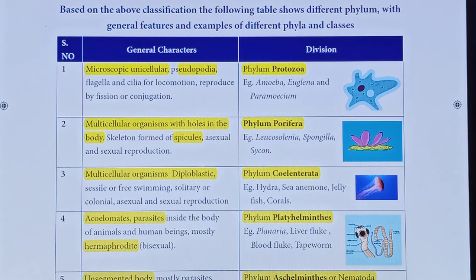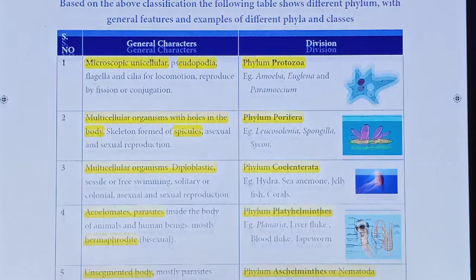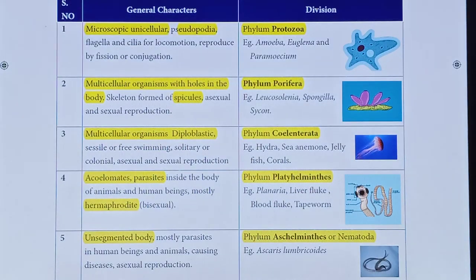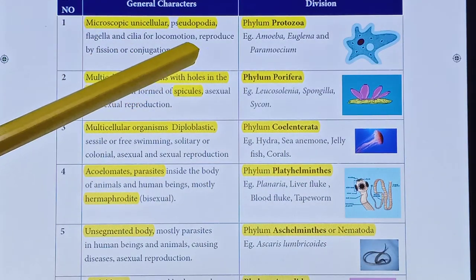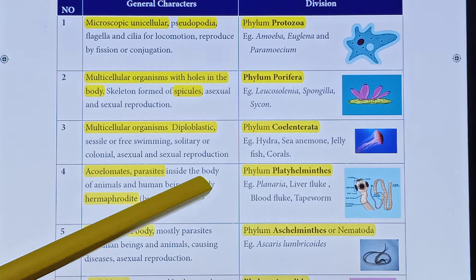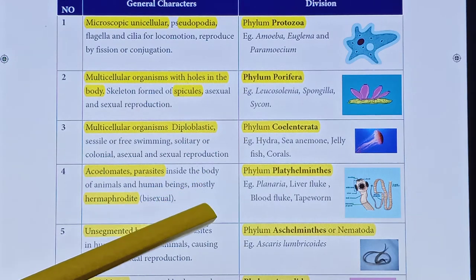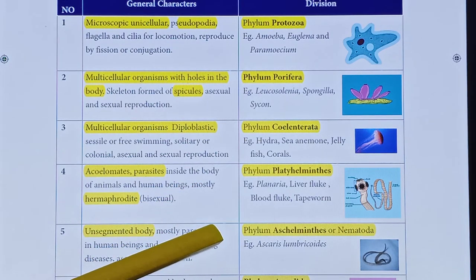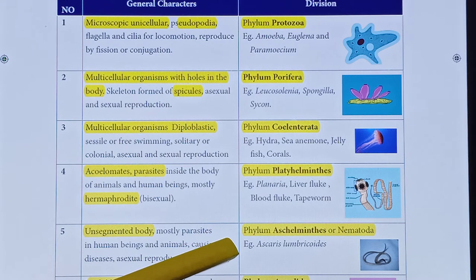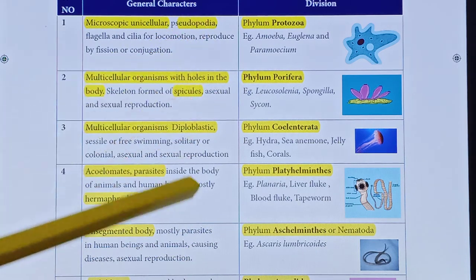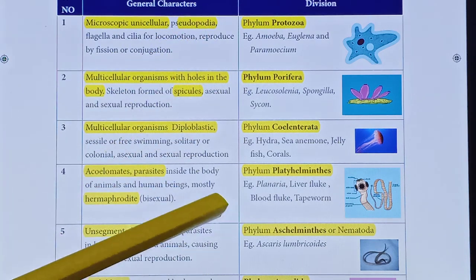Multicellular organisms — Metazoa — are further classified into different phylums: Phylum Porifera, Phylum Coelenterata, Phylum Platyhelminthes, Phylum Nematoda (Aschelminthes), Phylum Annelida, Phylum Arthropoda, Phylum Mollusca, and Phylum Echinodermata.